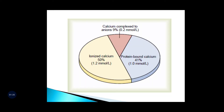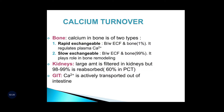Out of this 1%, 41% is combined with plasma proteins such as albumin and is non-diffusible through the capillary membrane — it is not usable by the tissues. The 9% is diffusible but combined with anionic substances of the plasma and interstitial fluid. The remaining 50% in the plasma is both diffusible through the capillary membrane and ionized. This 50% is responsible for most functions of calcium in the body, such as cardiac activity, smooth muscle activity, nervous system function, and bone formation.